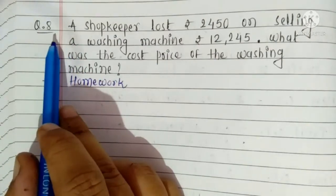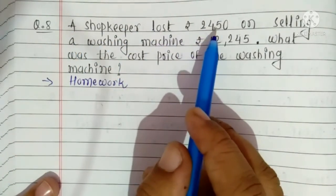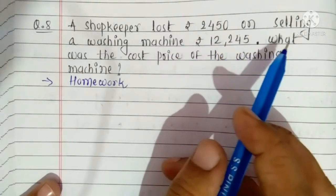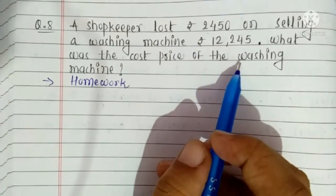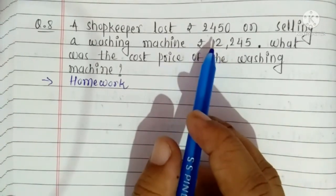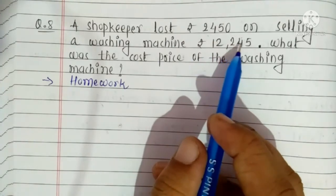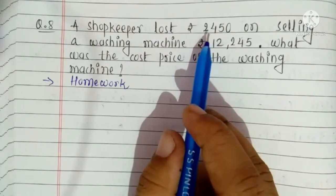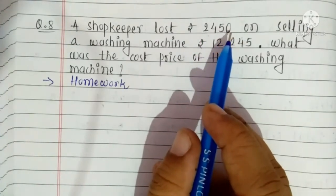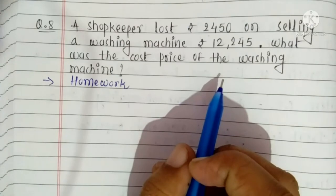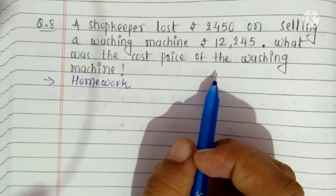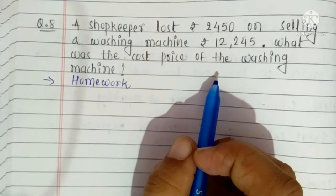Question no. 8: A shopkeeper lost Rs. 2450 on selling a washing machine for Rs. 12,245. What was the cost price of the washing machine? To find Cost Price of the washing machine, we add Selling Price and Loss. This is due in your homework.